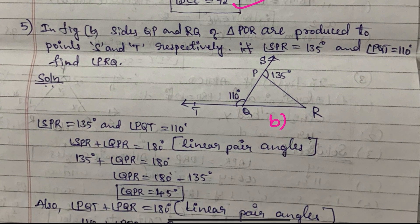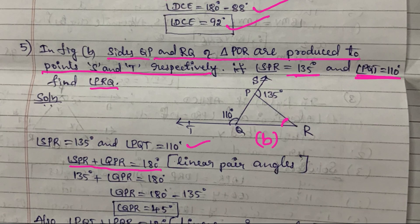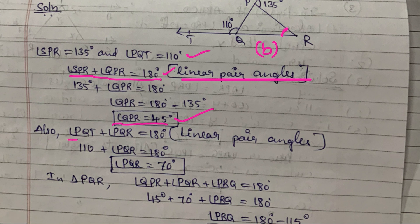Figure B: sides QP and RQ of triangle PQR are produced to points S and T respectively. Angle SPR equals 135 degrees and angle PQT equals 110 degrees. Find angle PRQ. Using linear pair: angle QPR plus 135 equals 180, so QPR equals 45 degrees. Similarly, angle PQT plus angle PQR equals 180 degrees — linear pair — so PQR equals 70 degrees.